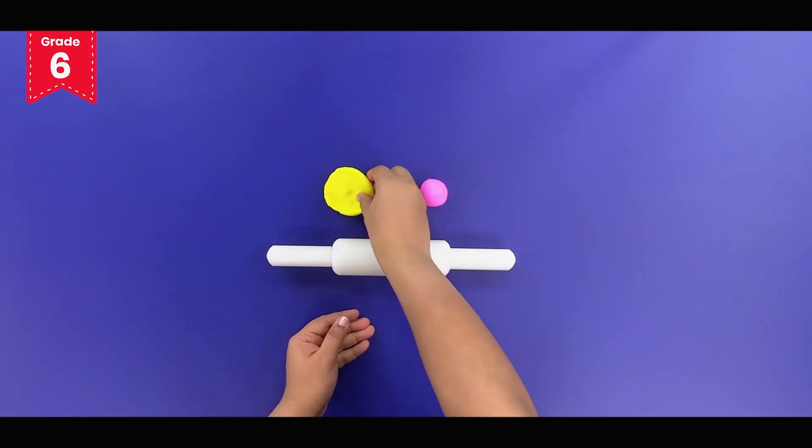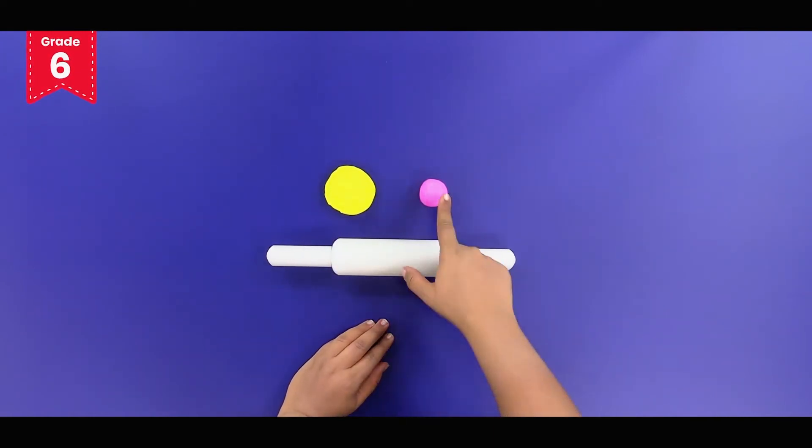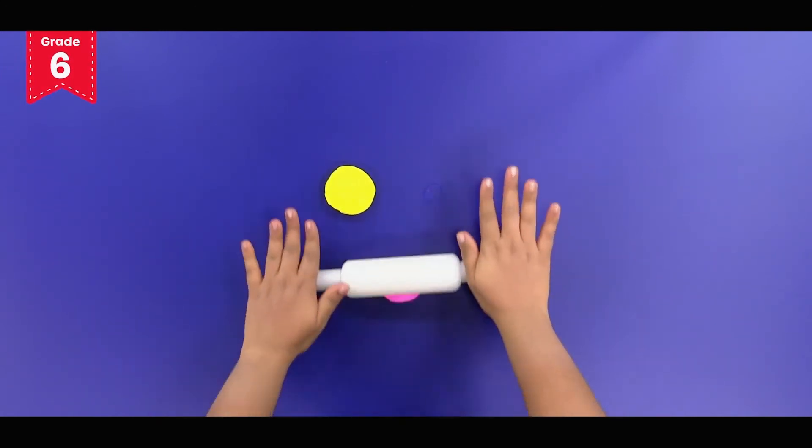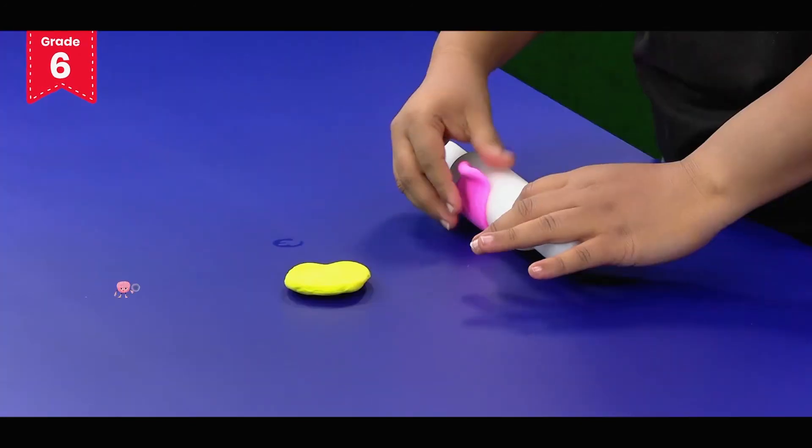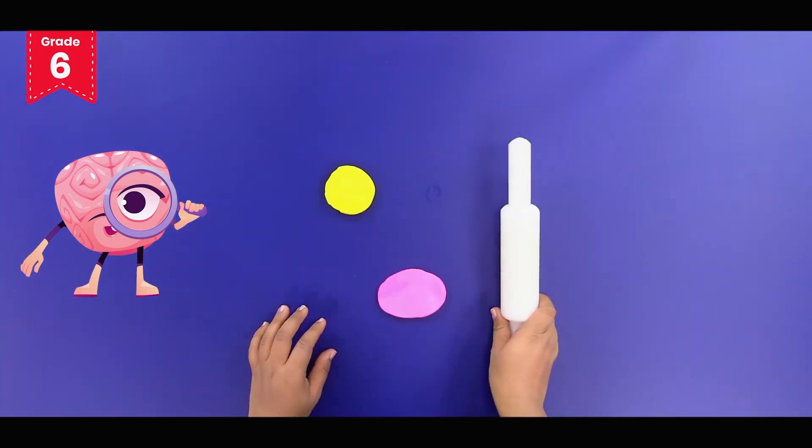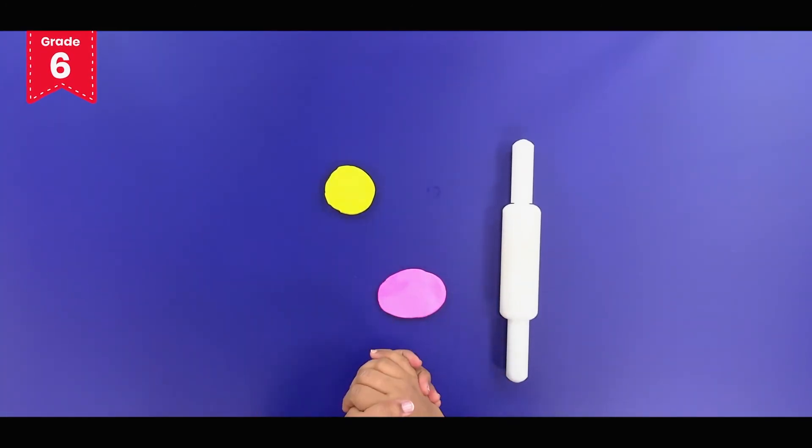Now let's try to flatten the second clay ball using this rolling pin, similar to what we do while making a chapati. I can feel it was much easier than in the first case as I applied a very less amount of force.